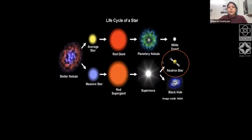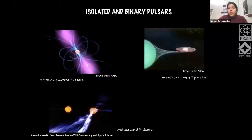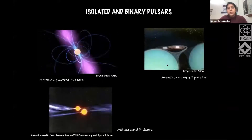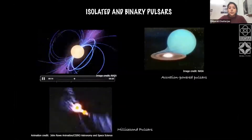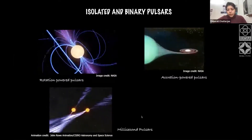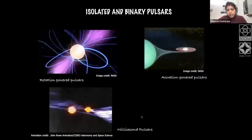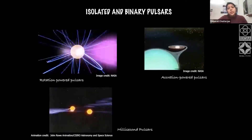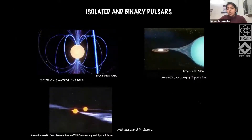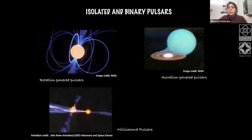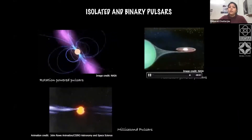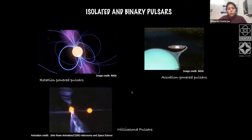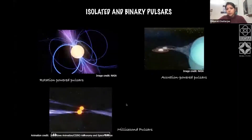Pulsars are compact objects formed at the endpoint of evolution of massive stars that end in core collapse supernova explosions. From radio observations of periodic pulses, we know there are different types of pulsars, isolated or in binary. There are rotation-powered pulsars whose energy is provided by their very strong magnetic field. There are also accretion-powered pulsars in binary systems where the pulsar's strong gravity sucks up material from its companion. After the accretion powered phase, the companion can also go supernova, creating a binary pulsar system.